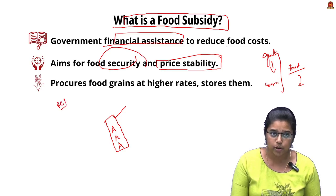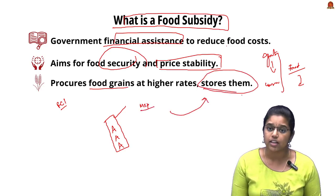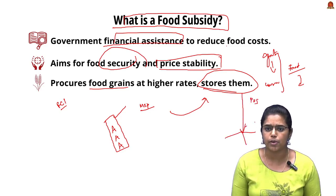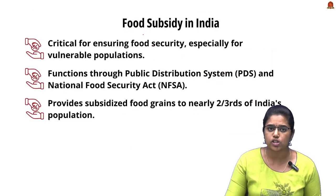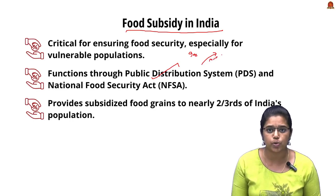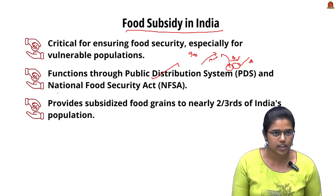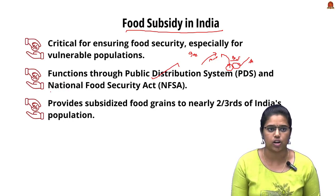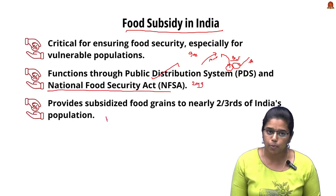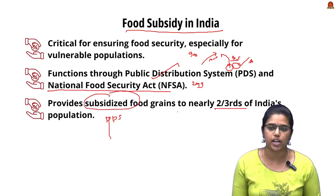In India, the Food Corporation of India procures food grains at the MSP rate, stores them in warehouses, and distributes them to low-income families through the Public Distribution System. The PDS is the primary mechanism where the government procures food from farmers at MSP and distributes it at a subsidized rate to the lower sections of society. We also have the National Food Security Act of 2013, which covers almost two-thirds of India's population.